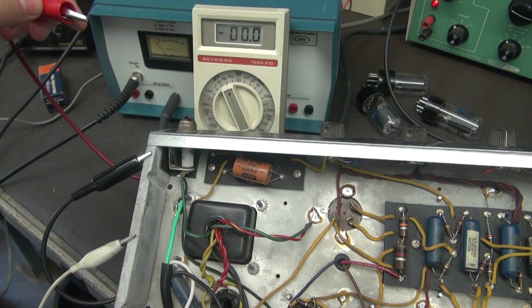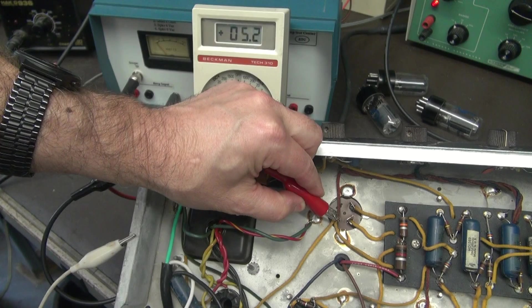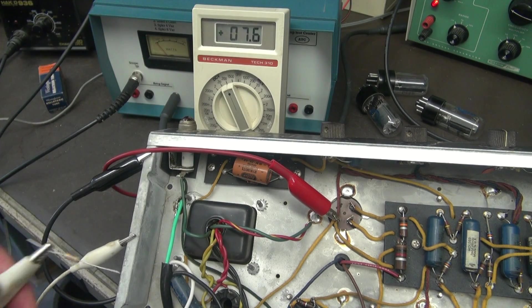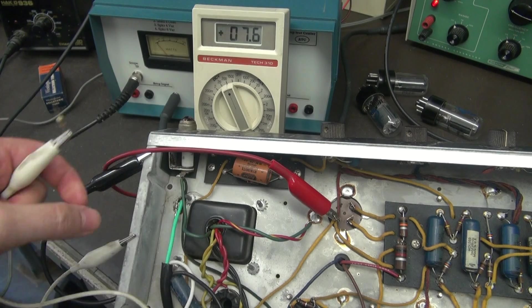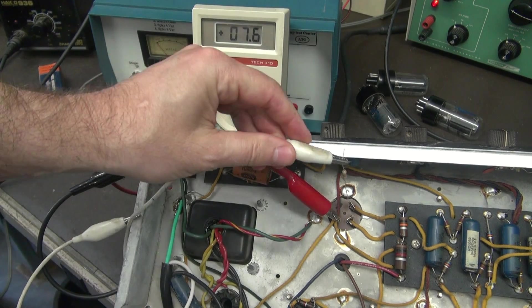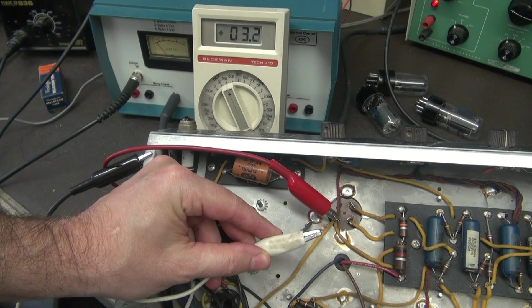First step for changing out a filter cap in any amp is monitor the voltage on the cap. You can see there's only 7 volts but sometimes it's much higher. Then I just take a resistor to ground. So you just got this clip go into the chassis. This is a 1000 ohm resistor. Pick about anything you want. Doesn't matter.